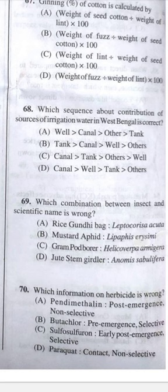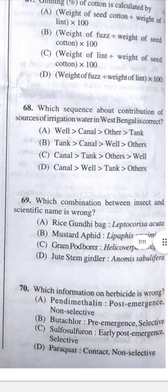Question 68: Which sequence about the contribution of source of irrigation water in West Bengal is correct? Answer B — tank > canal > oil (diesel pump) > other sources.